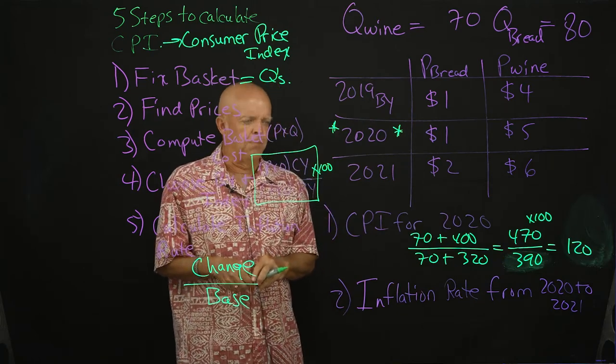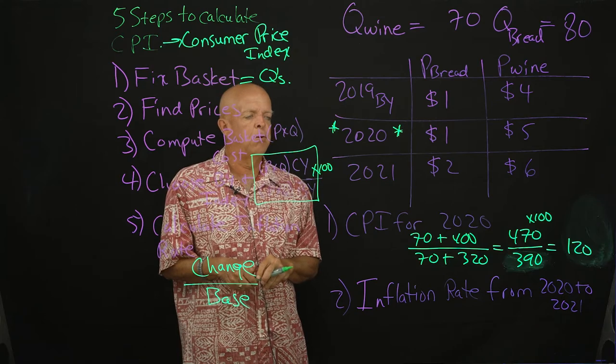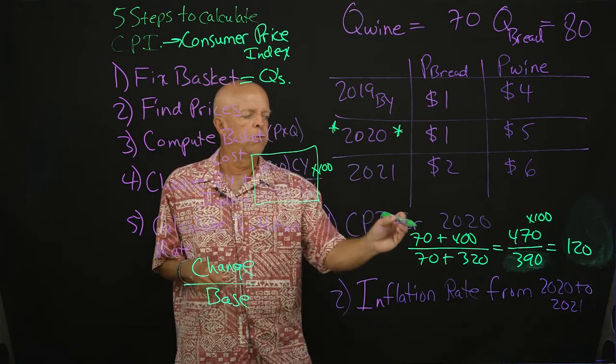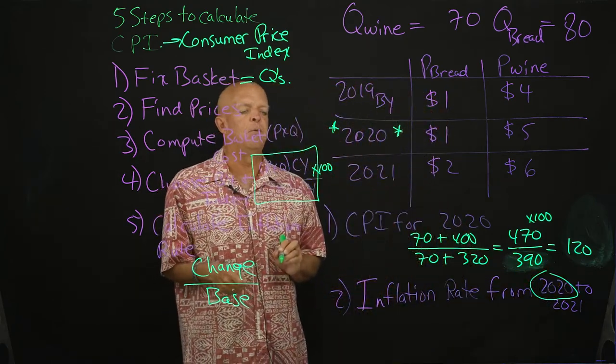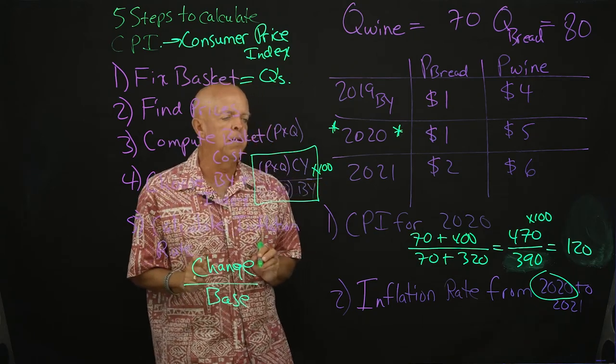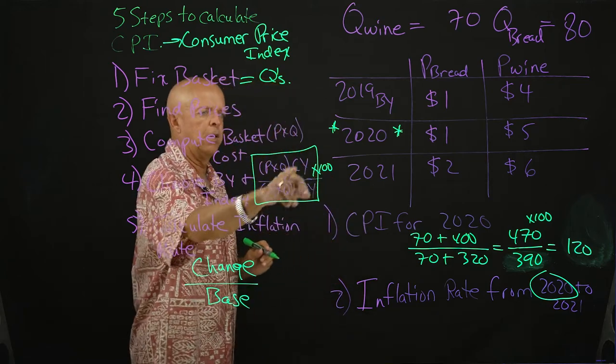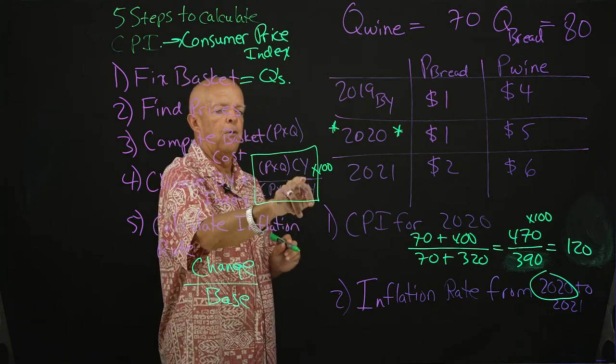Alright, so final step. The inflation rate from 2020 to 2021. We have the CPI for 2020. Now we want to get the CPI for 2021. It's pretty much the same steps as we did for 2020. It would be the price times quantity for the current year which is 2021 over the price times quantity for the base year.